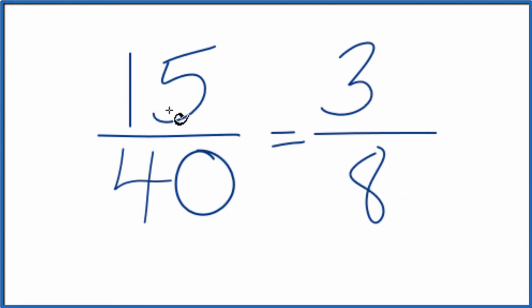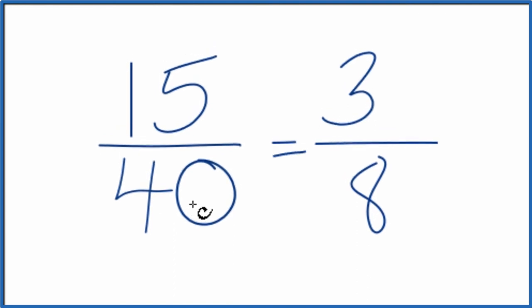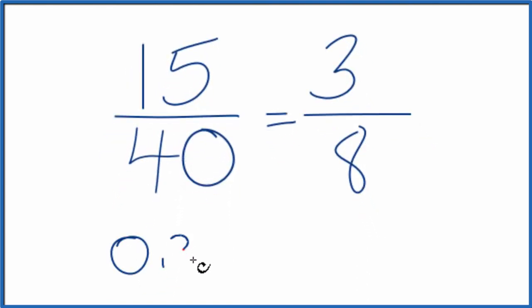If you were to divide 15 over 40, you would end up with 0.375. If you divide 3 by 8, you would end up with 0.375.